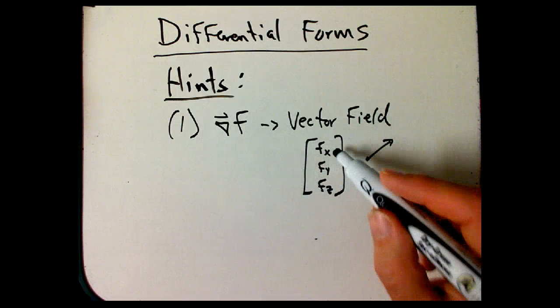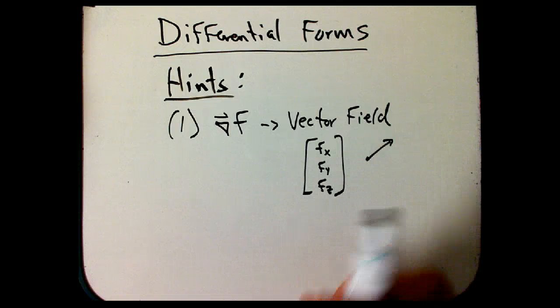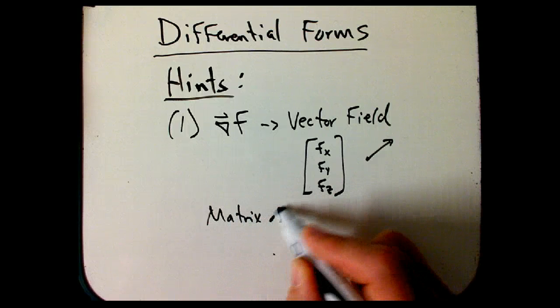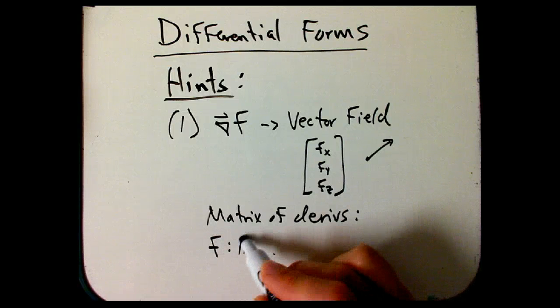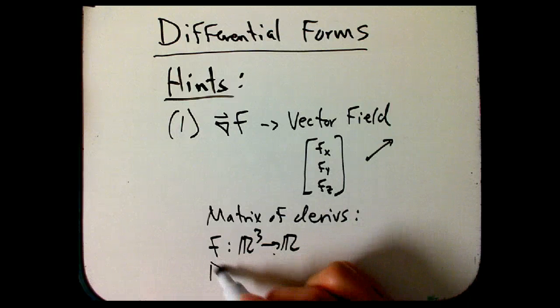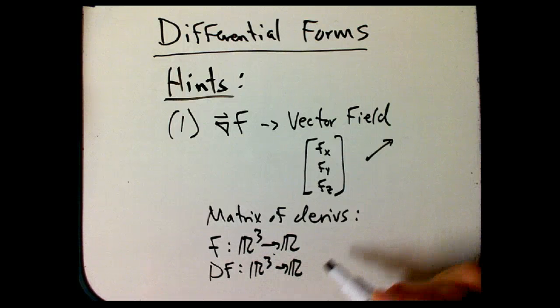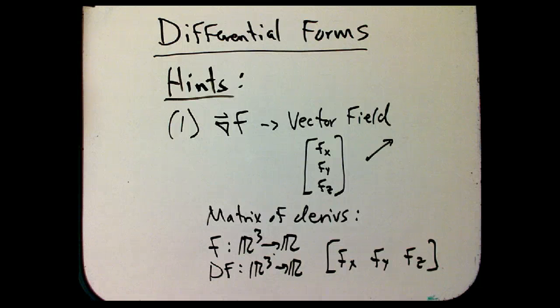But the trouble is, that's just really the wrong way to put these derivatives together. Because the right way to put these derivatives together is the matrix of derivatives. And since this is a function from R³ to R, then the matrix of derivatives should be exactly the same kind of function, just a linear function. And that's a row vector: fx, fy, fz.